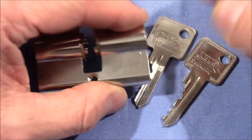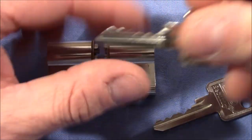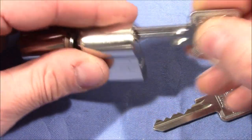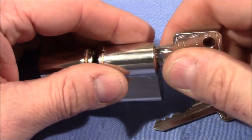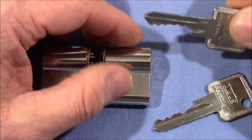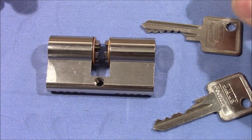But this ABUS was special because it came with a bitting like this and it was very easy to rock open. So the question arose: is it just a bitting or is it the lock which makes it easy to rake or rock open?